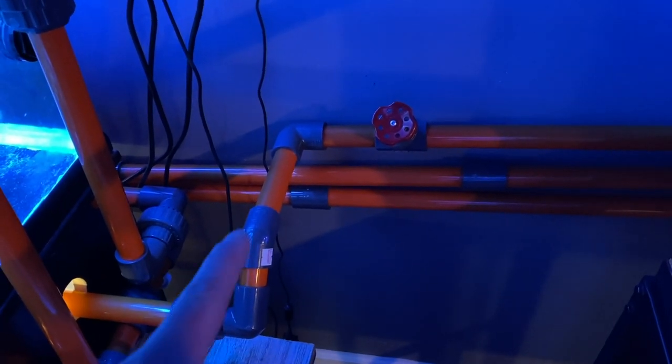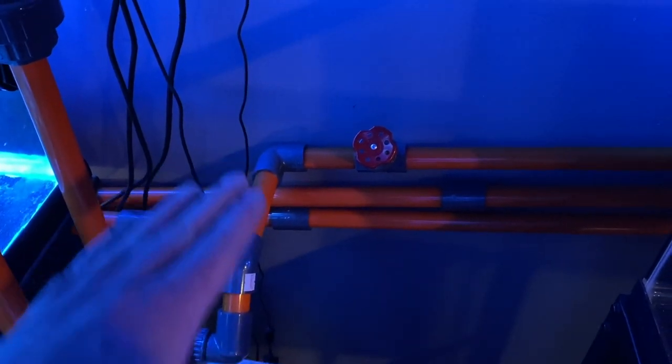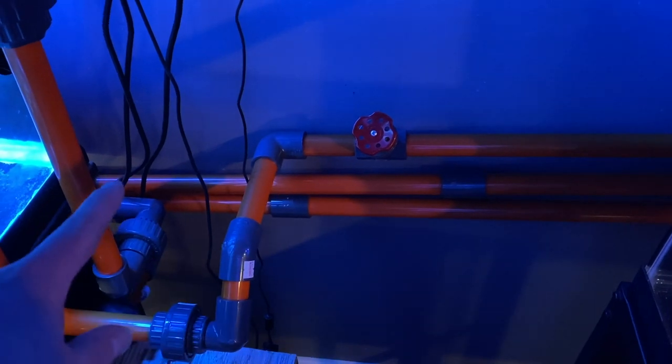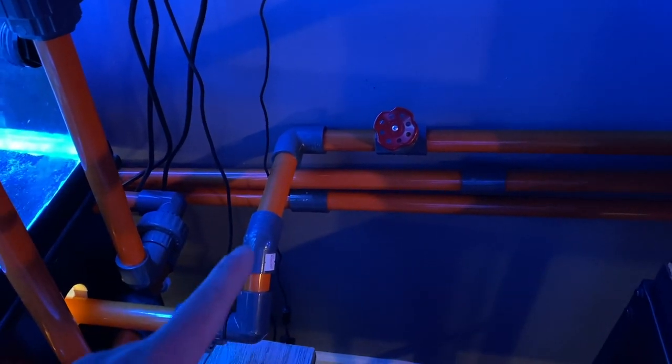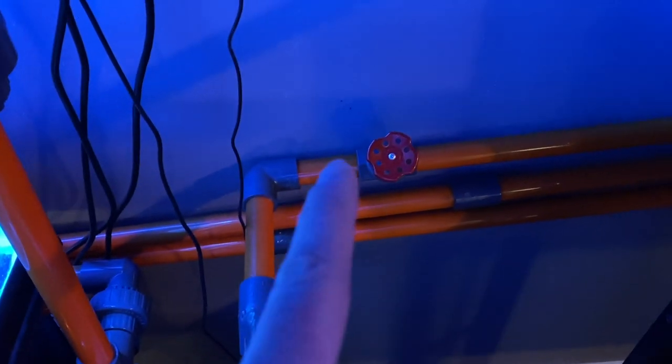what you see here is the second version. The first version went straight across, which caused the pipe to sit too low. That made it so that the other drains could not run underneath the main drain. So then I added this 45, which raises it up just a little bit and allows the other drains to run underneath.